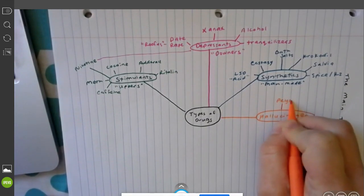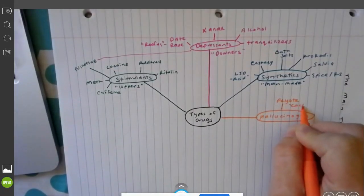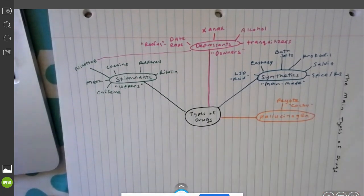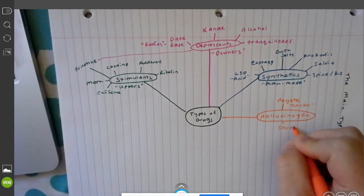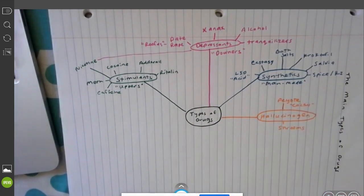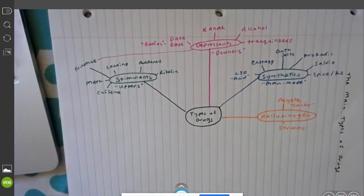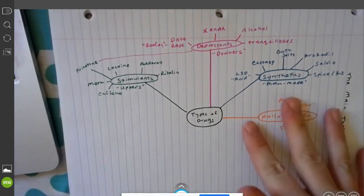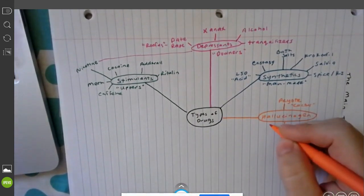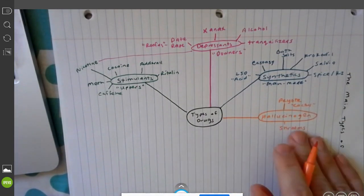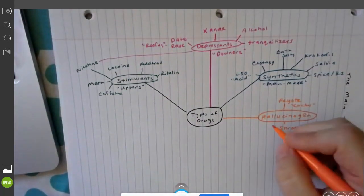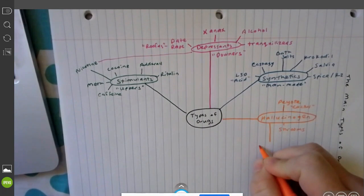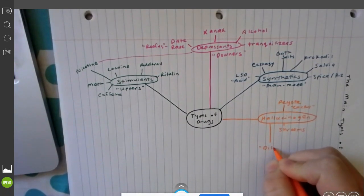The natural ones would be a cactus called peyote. Another natural hallucinogen would be shrooms or mushrooms. But then you have some man-made forms of hallucinogens, and this is going to be a special type of hallucinogen where you dissociate from yourself. When the person is tripping on this drug they actually look down on themselves and see themselves outside of their body.